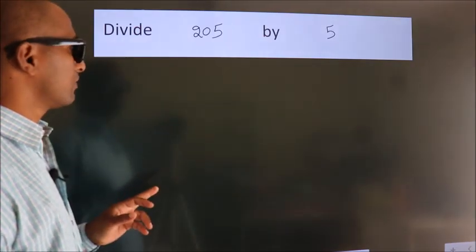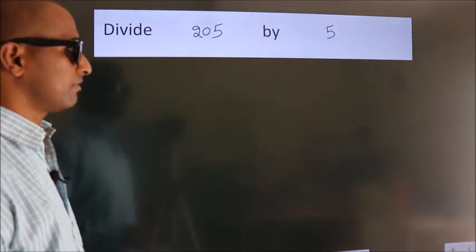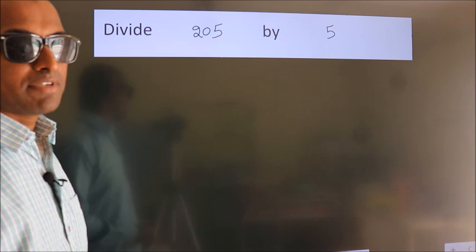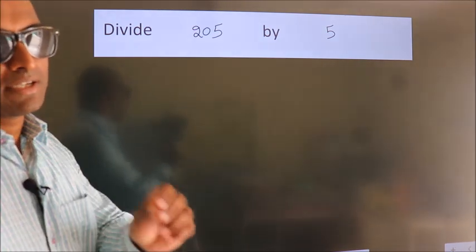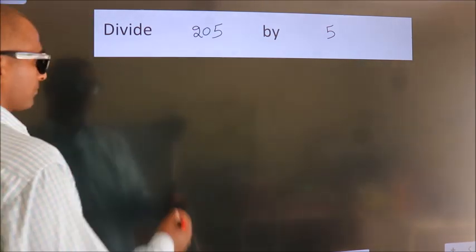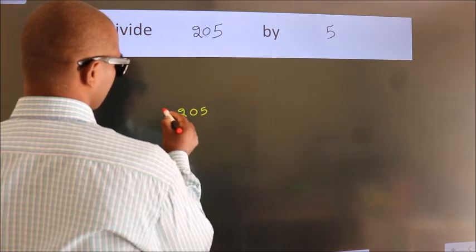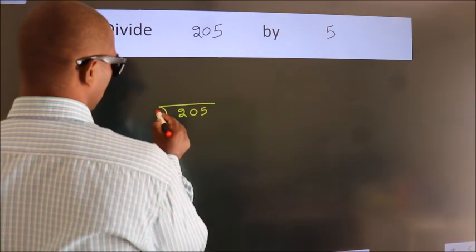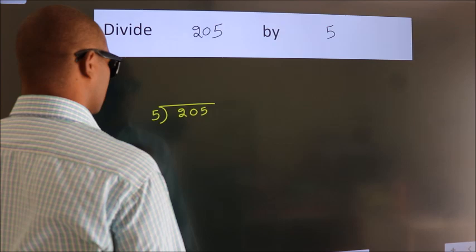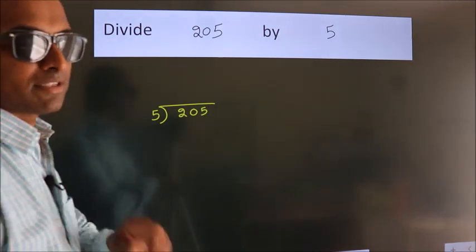Divide 205 by 5. To do this division, we should frame it in this way. 205 here, 5 here. This is step 1.